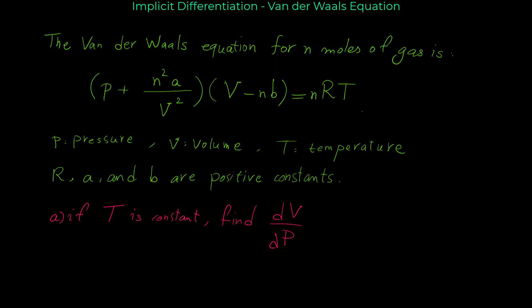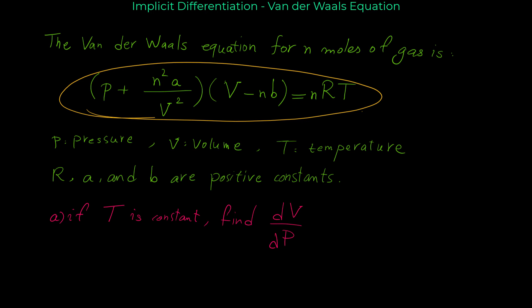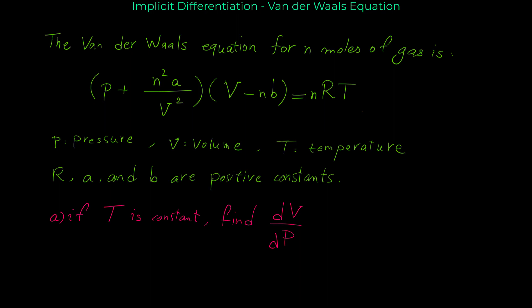In this video, I'm going to show you how we can find derivatives using implicit differentiation. The Van der Waals equation for n moles of gas is: p plus n squared a over v squared, times v minus nb, equals nRt. In this implicit relation, p shows pressure, v shows volume, and t is temperature. R, a, and b are positive constants. The only variables in this implicit relation are pressure, volume, and temperature — this is an implicit relation between p, v, and t.